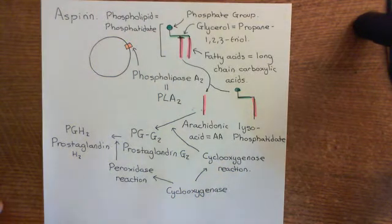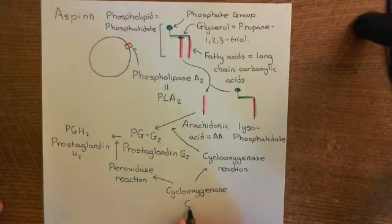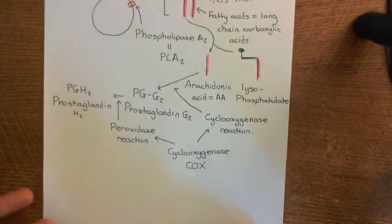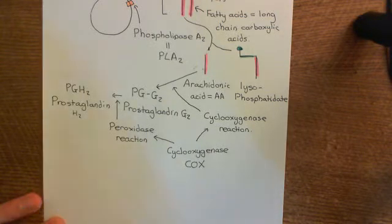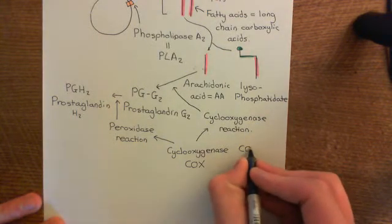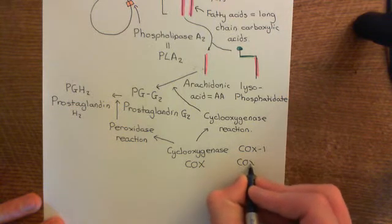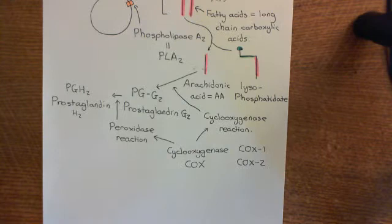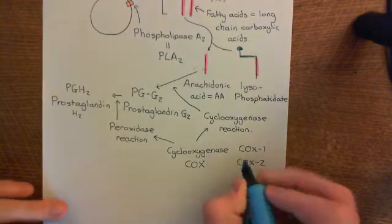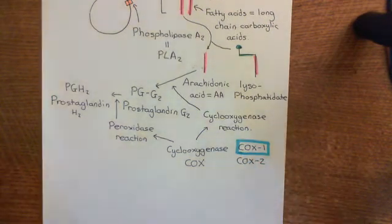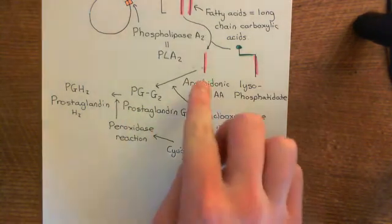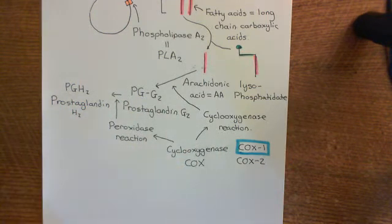There are two major forms of cyclooxygenase in the body — potentially three, but the third is still debatable. Cyclooxygenase is often abbreviated to COX. The two forms are known as COX-1, or cyclooxygenase-1, and cyclooxygenase-2. The form of cyclooxygenase important within platelets is cyclooxygenase-1, which converts arachidonic acid first to prostaglandin G2 and then into prostaglandin H2.